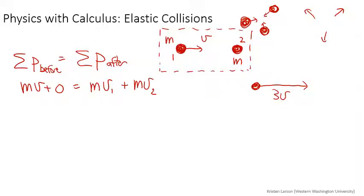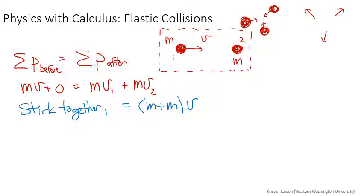If the two things stick together, then the after is going to be equal to (m + m) times the v that they have, let's call it v12. Afterwards, the two of them mush together into a common ball and head off in some new speed v12.